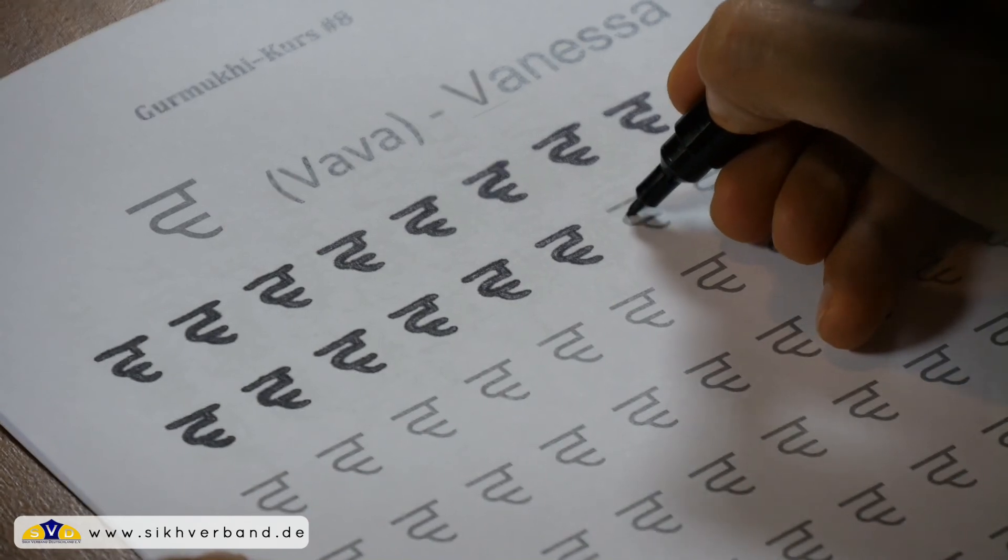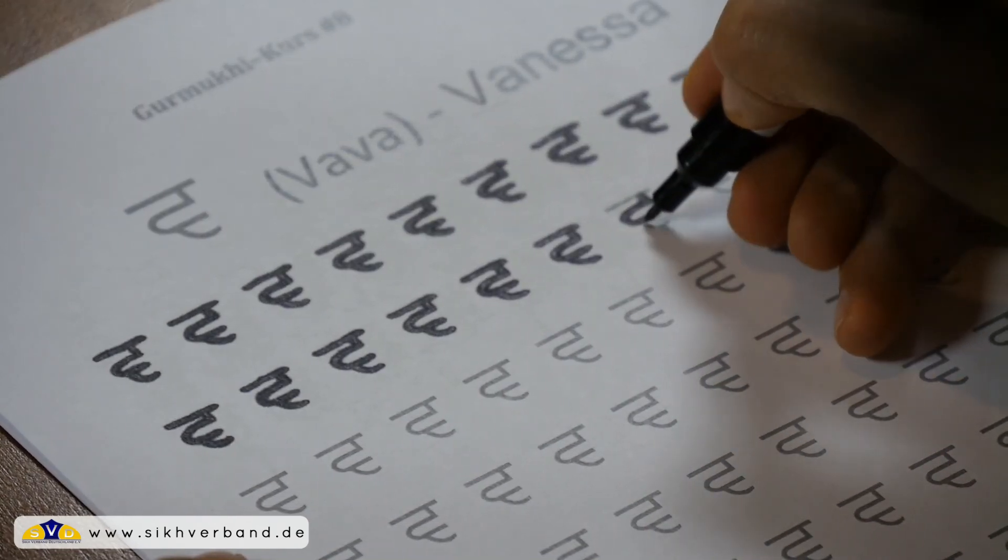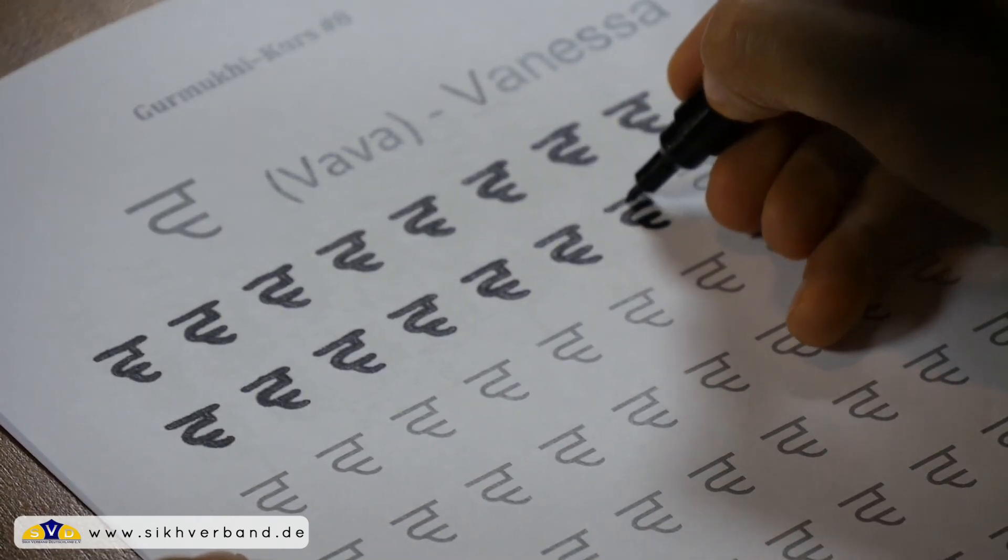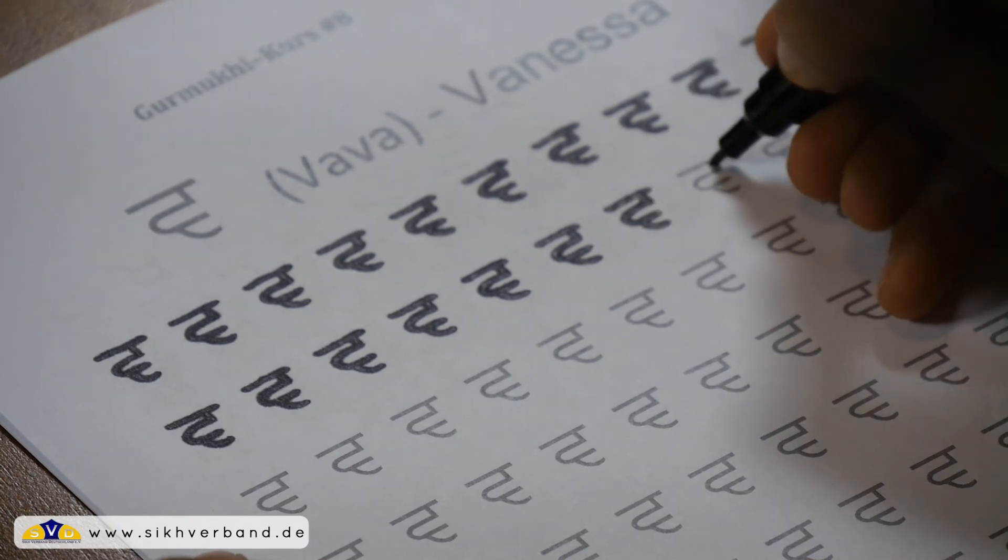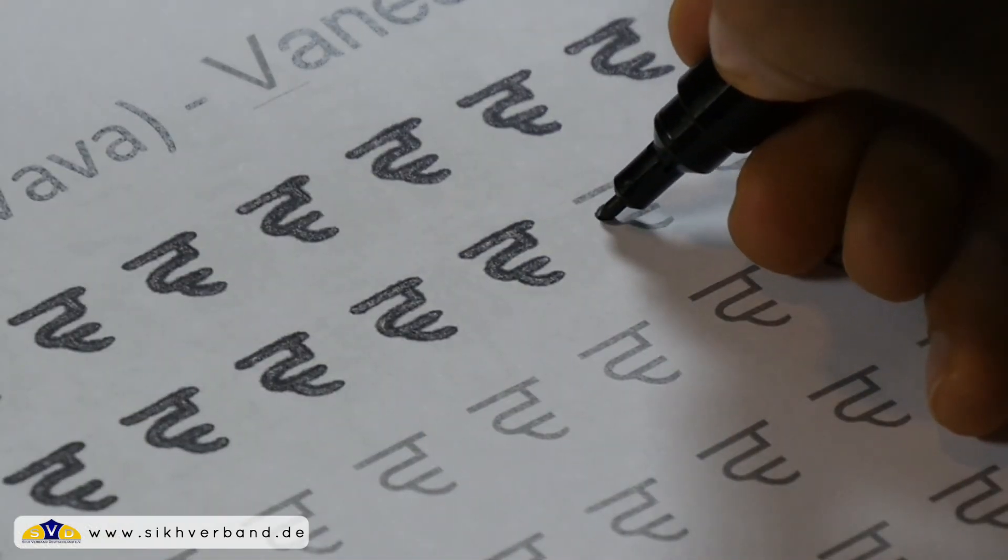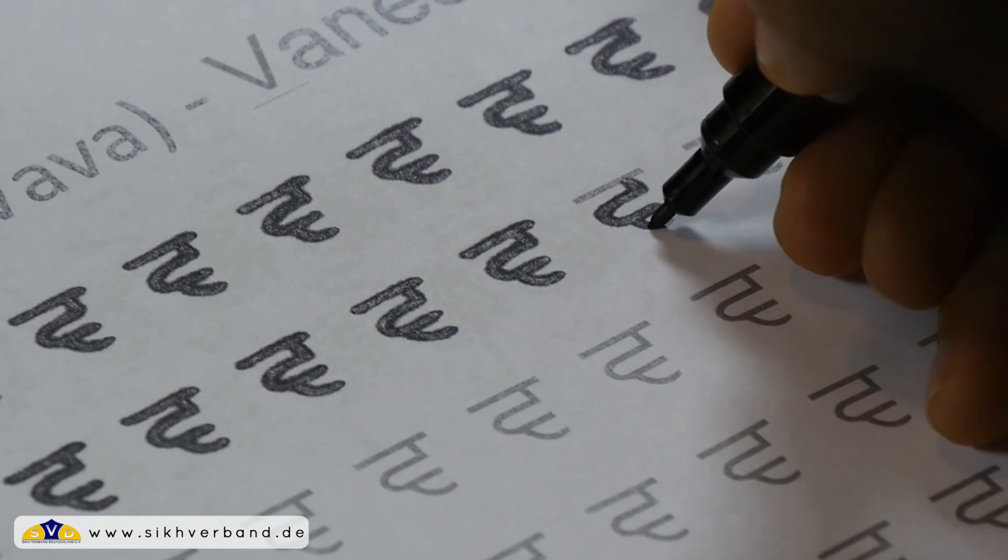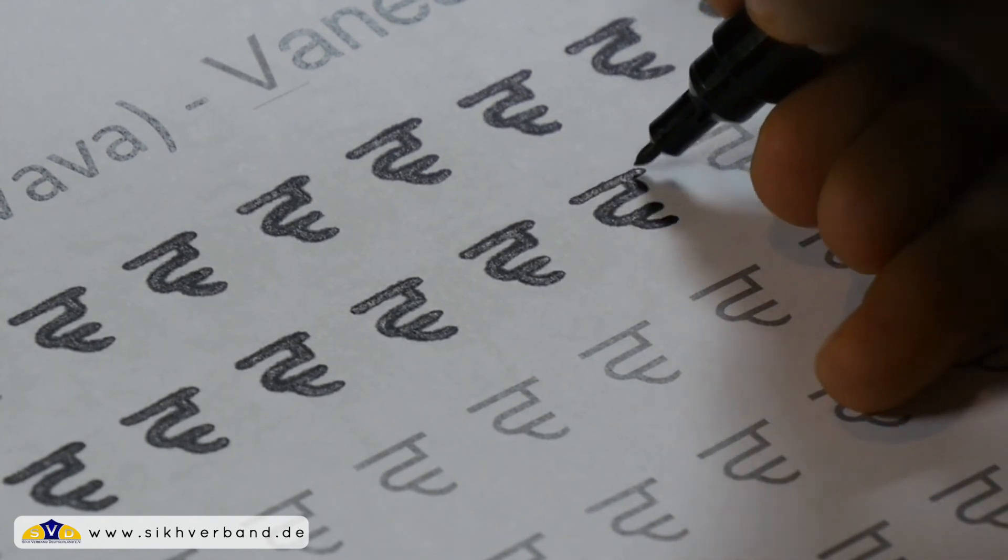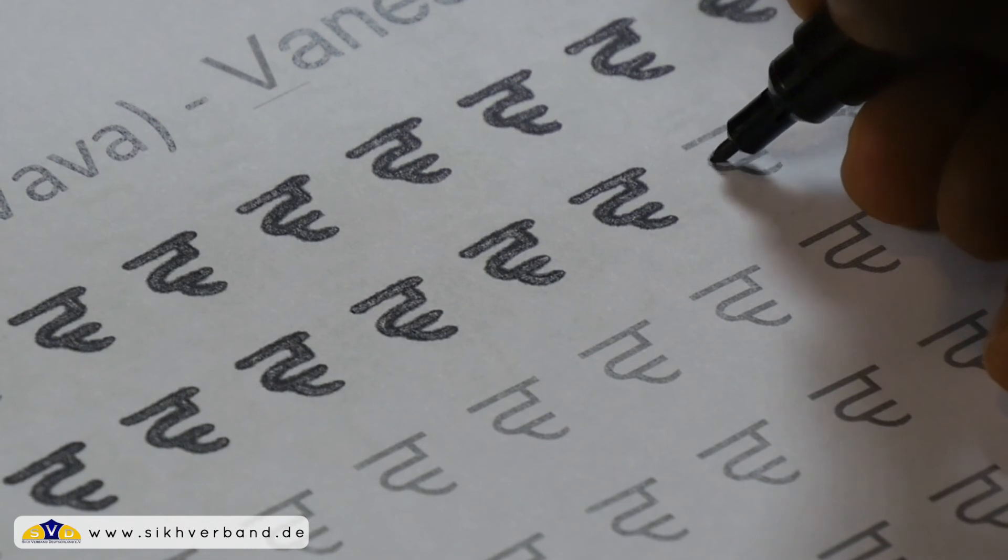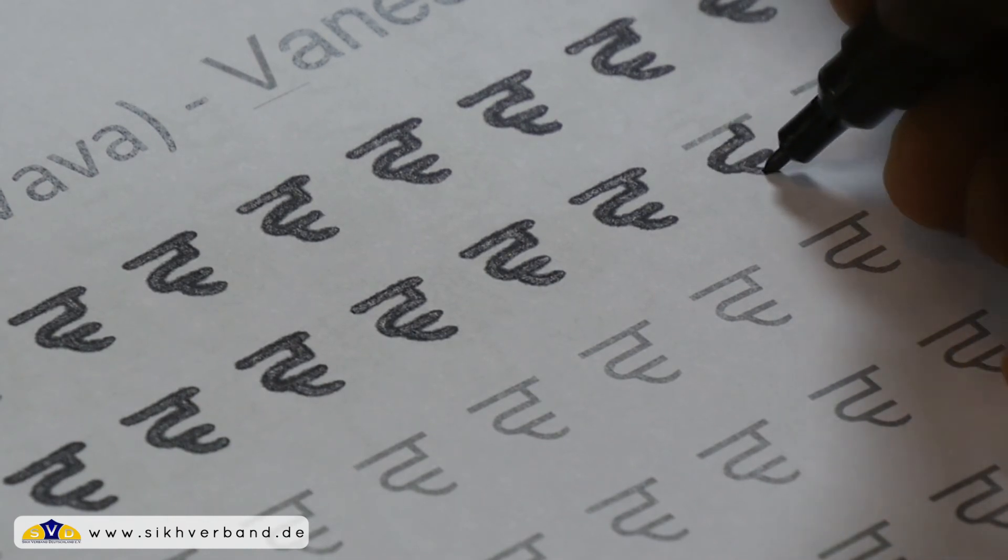Im Deutschen haben wir das V, hört sich eigentlich vom Klang her genauso an wie das F. Das V aus Volk wie bei F mit Felix vielleicht. Aber hier ist das permanent ein Vava.